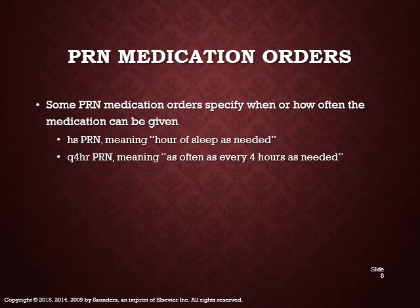PRN medication orders specify when or how often the medication can be given. PRN means as needed. We give those in response to a patient's request or when the need is indicated — like for pain, acid reflux, diarrhea, or constipation. If you see HS PRN, that means hour of sleep as needed, so at bedtime as needed. Q4 hours PRN means as needed every four hours.